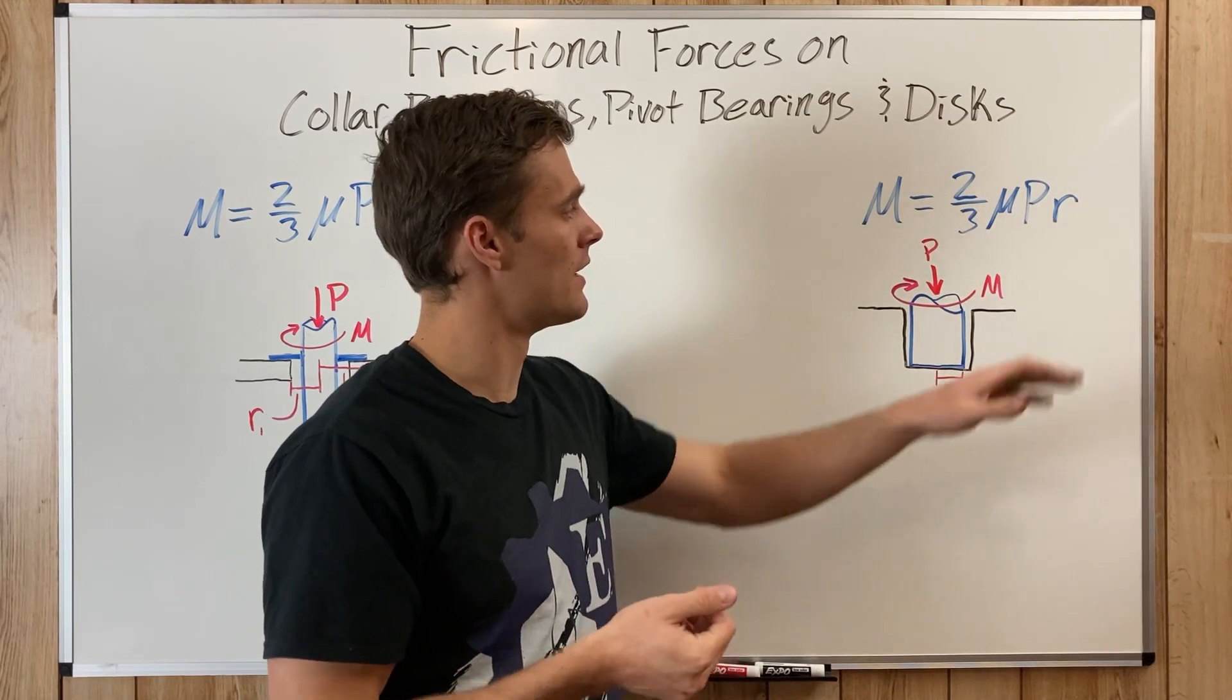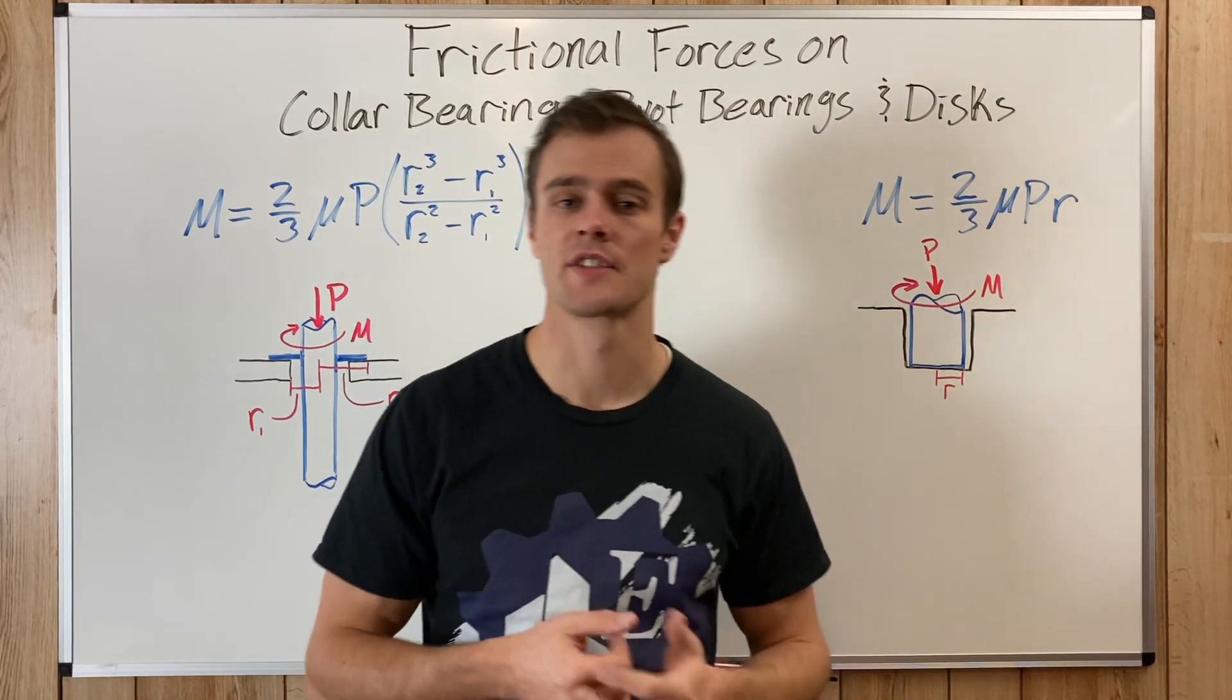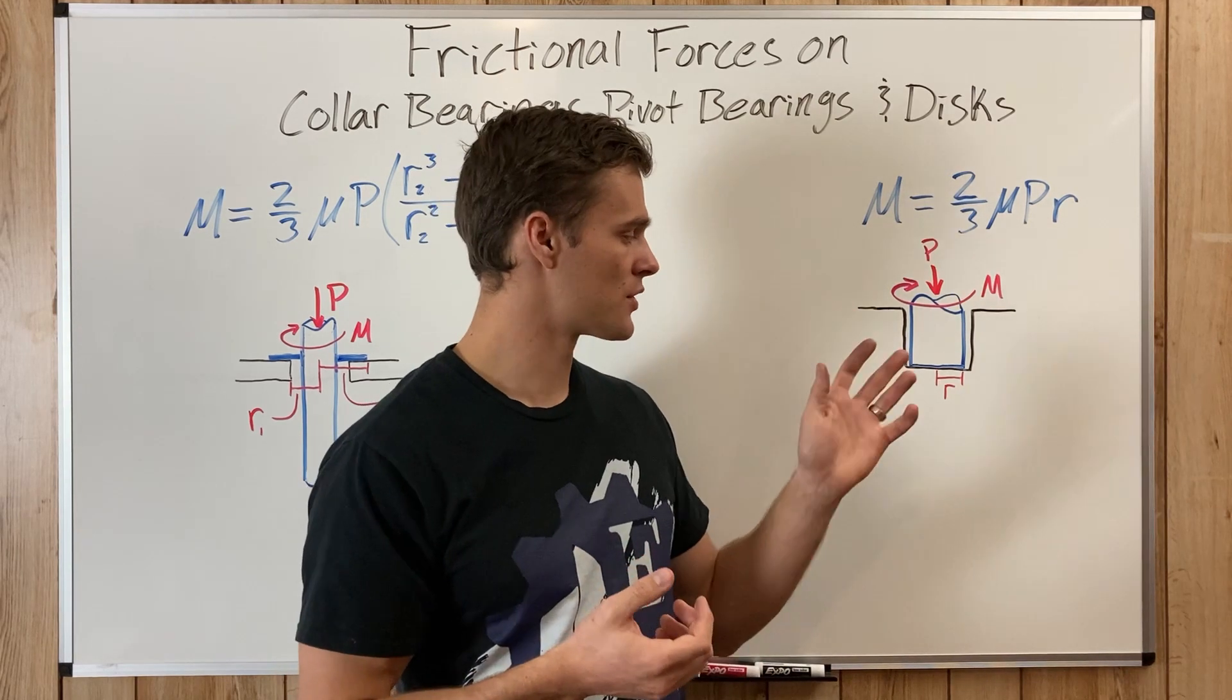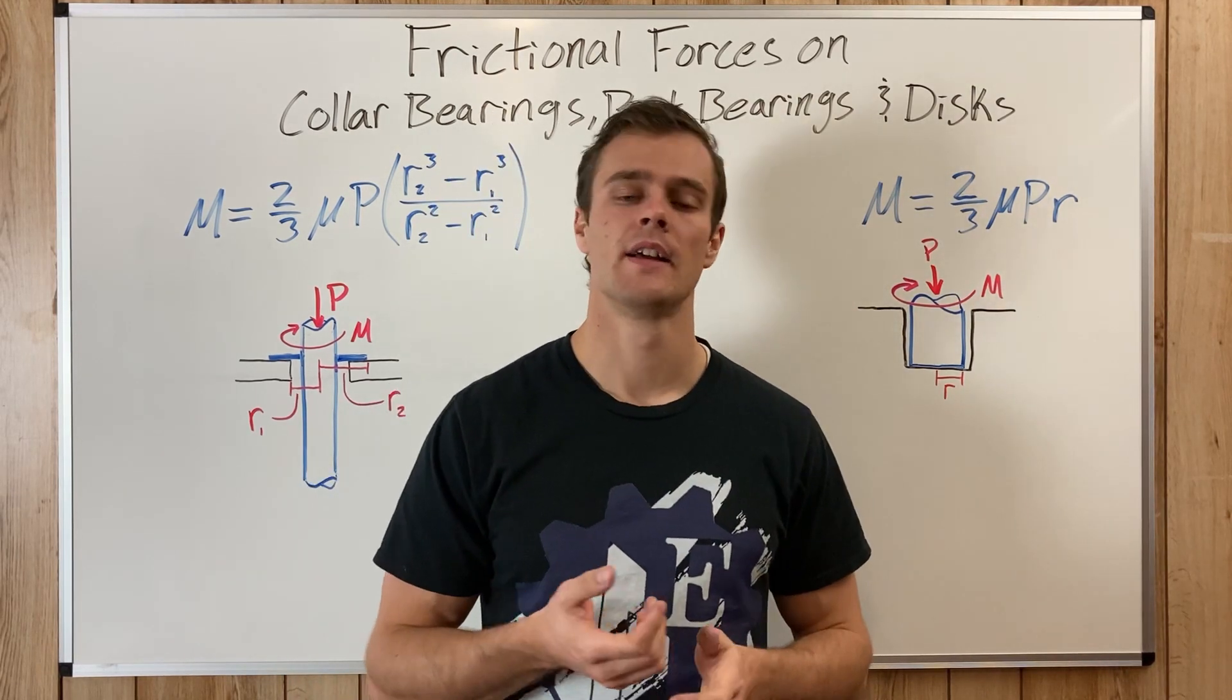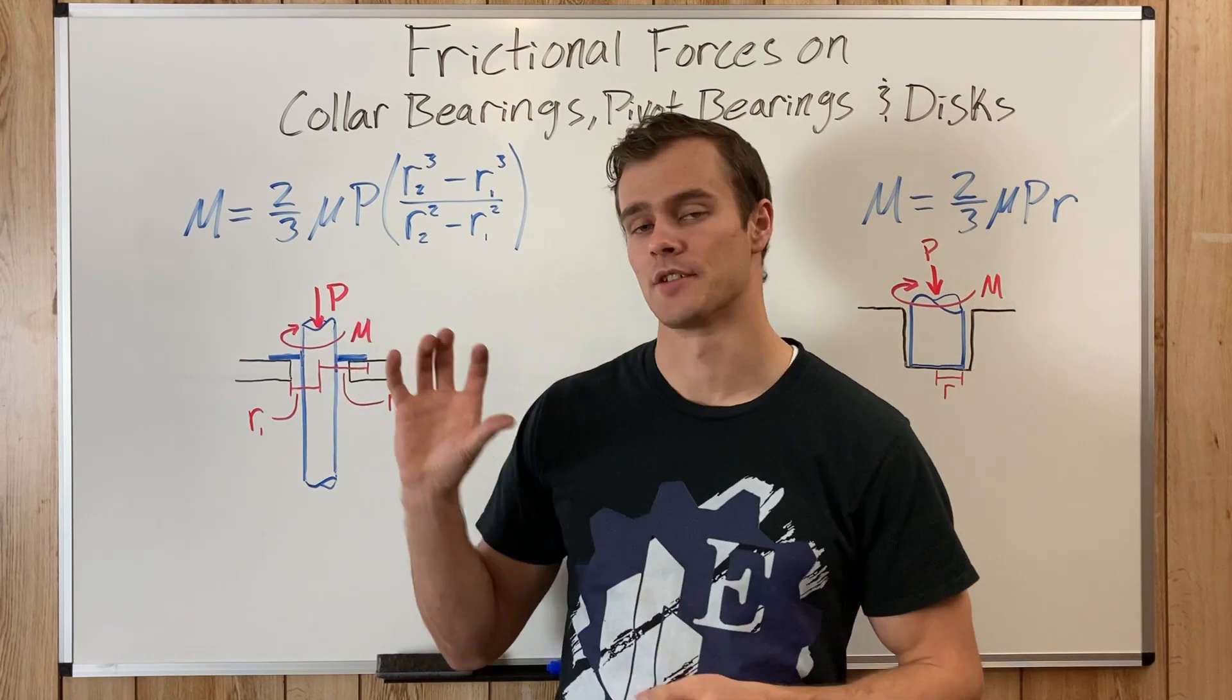And so the last one we have is μ, and that is the coefficient of static or kinetic friction. It's static if there is no motion, but there's impending motion, and it is kinetic if that axle is actually rotating.